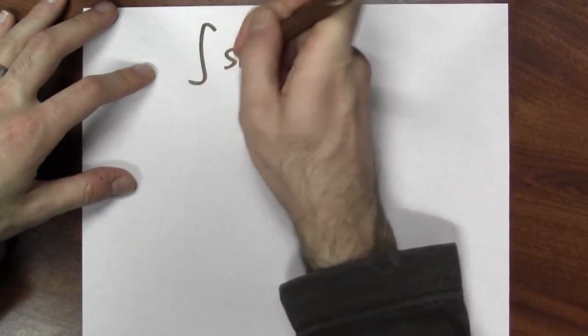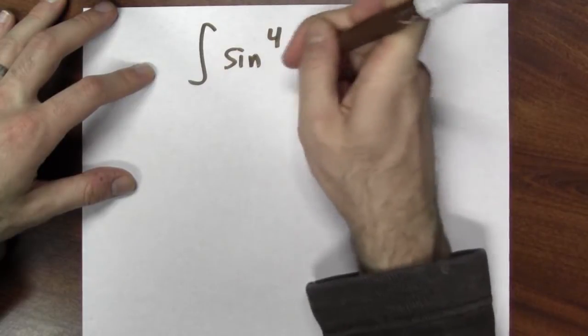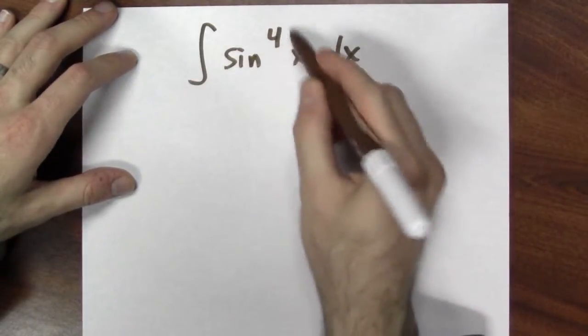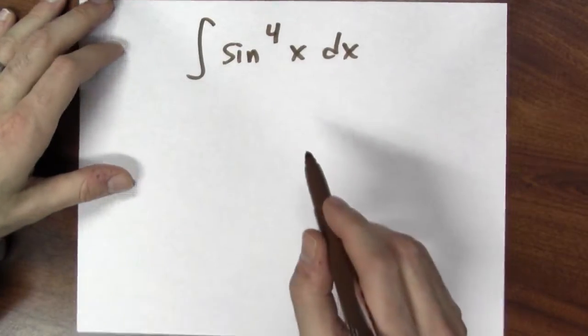Like, maybe I want to anti-differentiate sine to the fourth power, right? So this is not an odd power, but an even power. Ah, that's harder. I can't trade in all of my sines for cosines because I need just one left over to make the substitution work.